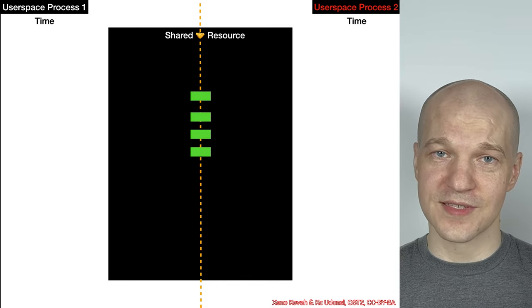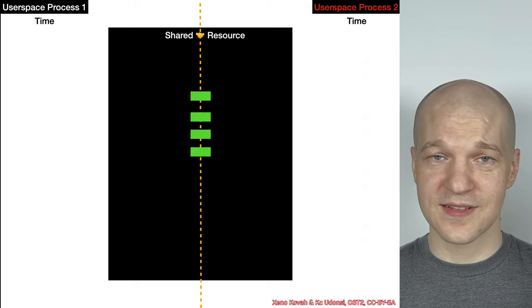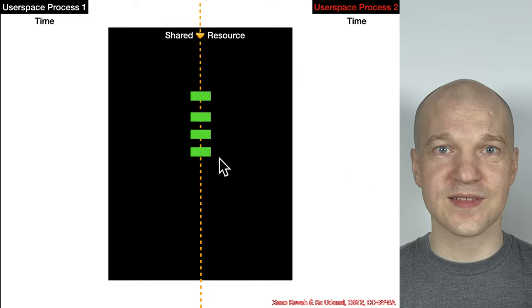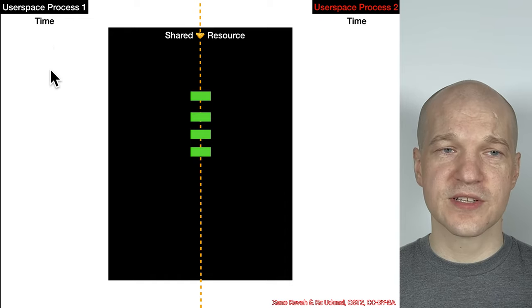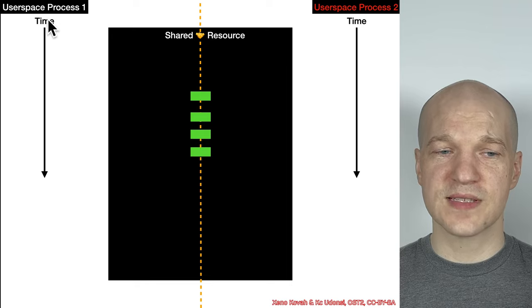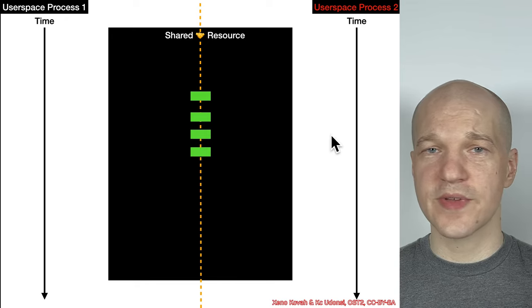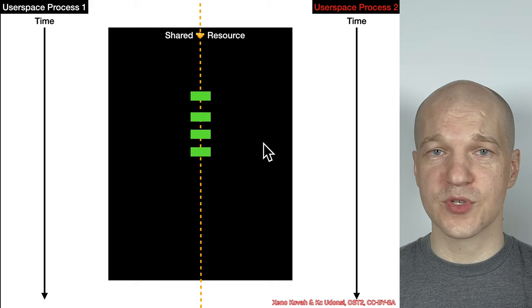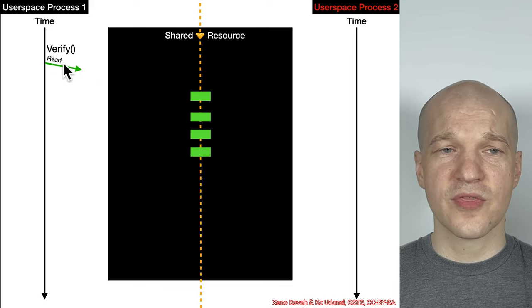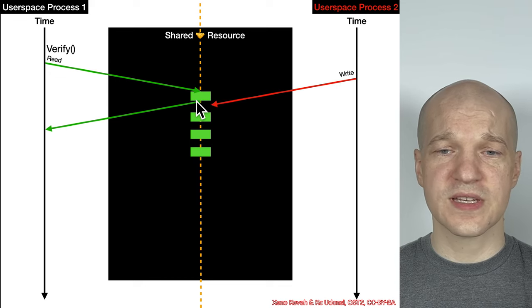I was spending too much time making these slides and eventually they looked like eyes to me, so I made a silly little animation. The way that we typically visualize race conditions is with one user-space process, time going from top to bottom, and a second malicious user-space process with time going top to bottom. There's some shared resource in the middle — could be RAM, could be a file system.